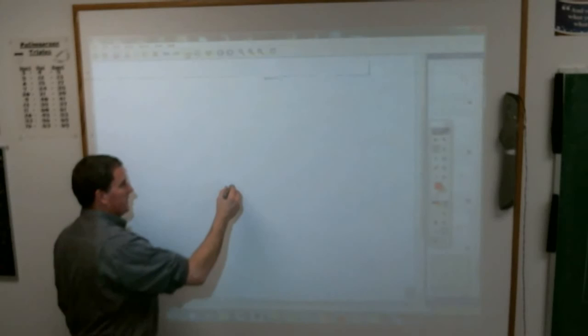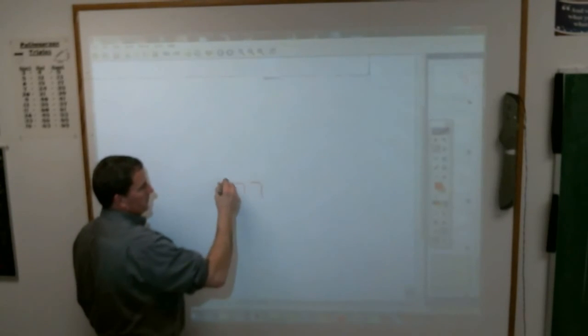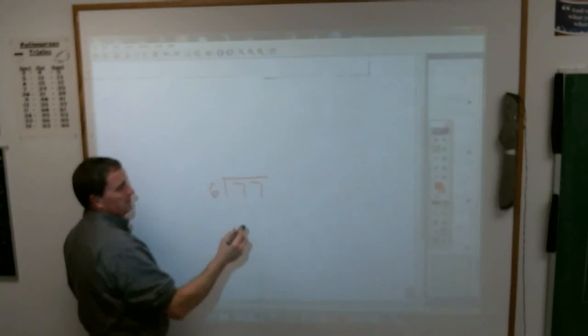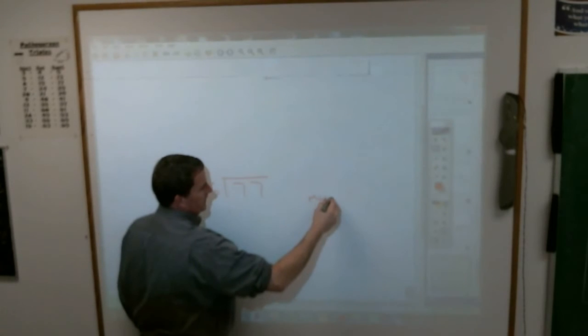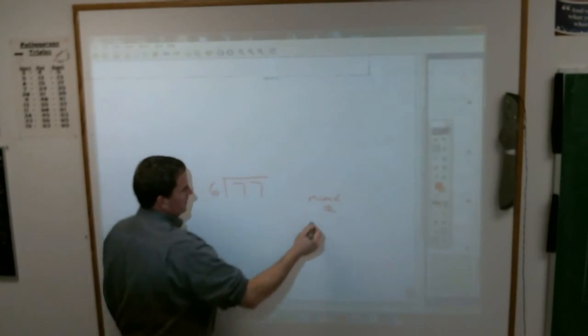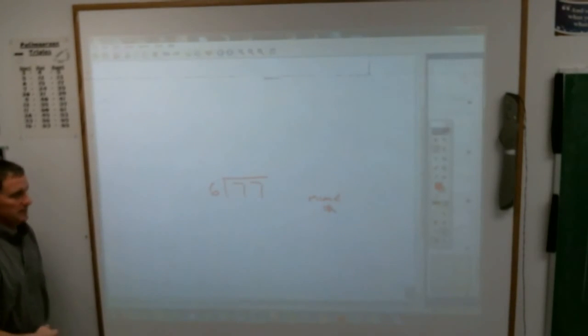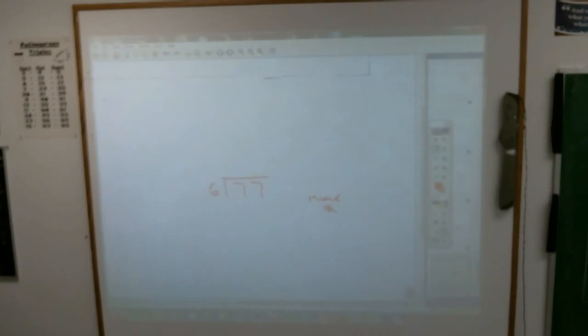If I'm doing 77 divided by 6, do that for me right now. And write your answer as a mixed number, not as a remainder. 6 into 77 as a mixed number. Let's see what you get. See if you get the same thing I get.